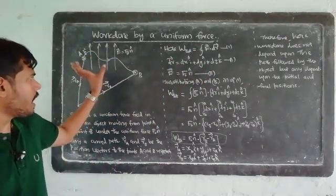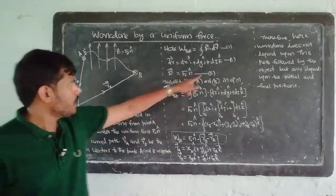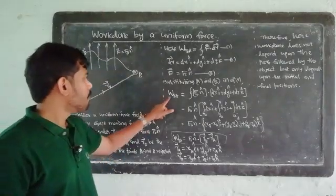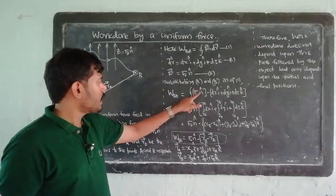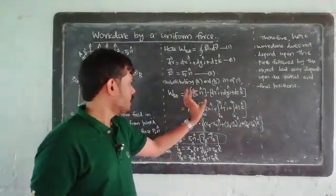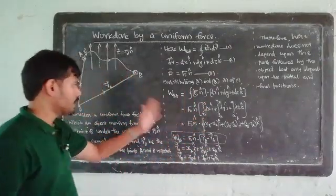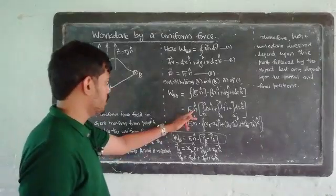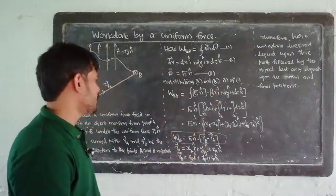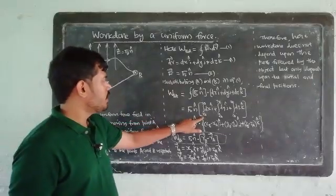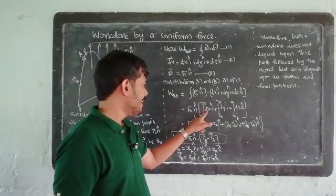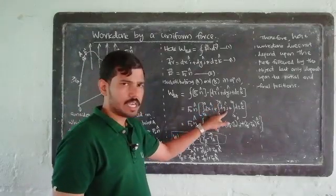Vector f is the uniform force field, given by equation f = f₀ n-cap. Substituting equation 1 into the work integral, the work done to move the object from point A to point B in this uniform force field is W_BA equal to the integral of f₀ n-cap dot (dx i-cap plus dy j-cap plus dz k-cap). Since f₀ n-cap is constant in direction and magnitude, it can be taken outside the integral.